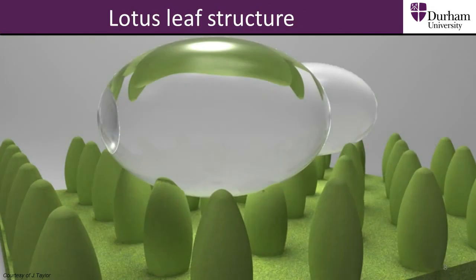There are lots of small pillars which prevent the droplet of water from reaching the lower surface. The shape of the pillars means that the water can't spread and just sits on the surface of the leaf.